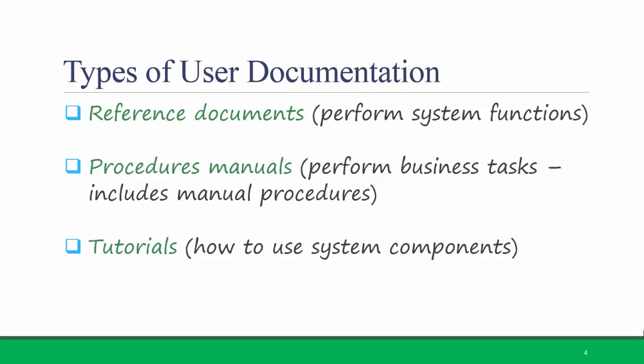If we wanted to create user documentation for Titanium, we could include any of these three types of documents. A reference document would contain instructions on how to perform a specific function, such as checking your grades on an assignment. A procedure manual would focus more on a longer process that needs to be completed — for example, using the assignments module from creating, to completing, to grading.